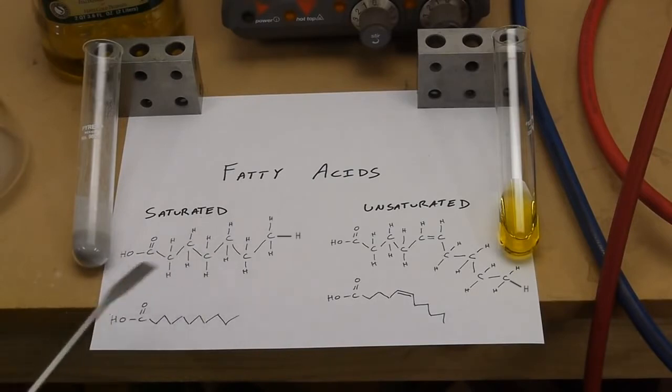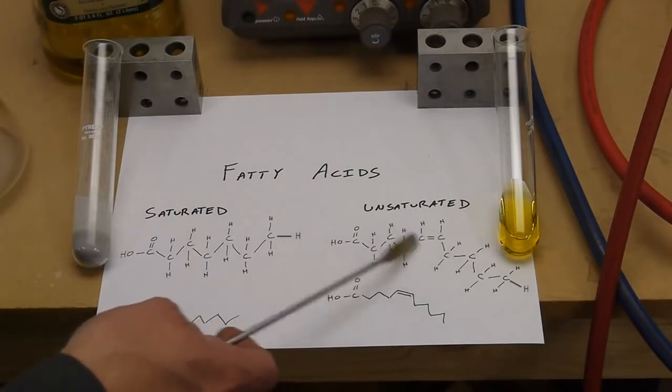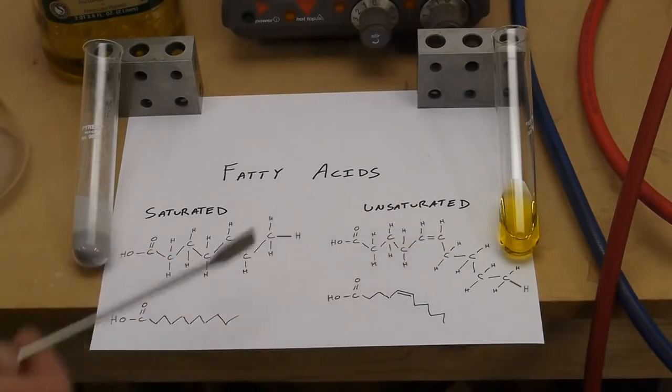In the unsaturated case, one of the bonds between the carbon atoms is double, and we've removed or there is no hydrogen here. It's only one hydrogen atom coming off when there could be two if we remove this double bond, so it's unsaturated.